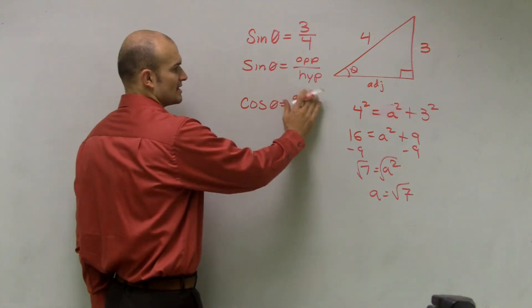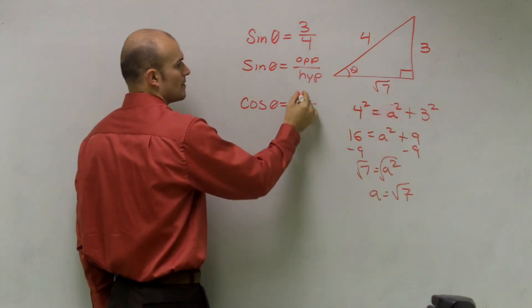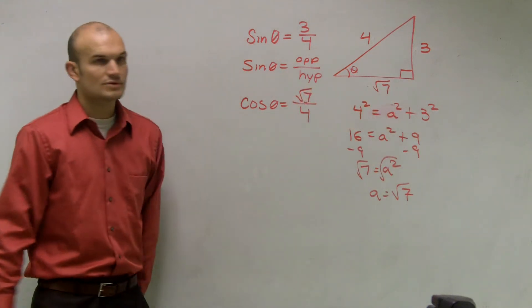So therefore, I can now say that the cosine, my adjacent is square root of seven, so that's going to be cosine of theta equals square root of seven over four.